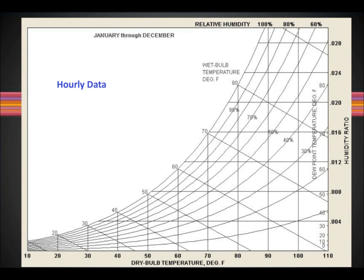Hourly data. The recorded outdoor conditions can be plotted for every hour of the year on this chart. For example, the temperatures and humidities for one 24 hour period might look like this.